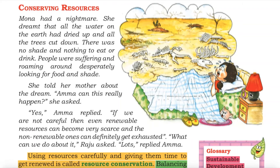She told her mother about the dream. Amma, can this really happen? she asked. Yes, Amma replied. If we are not careful, then even renewable resources can become very scarce, and the non-renewable ones can definitely get exhausted.